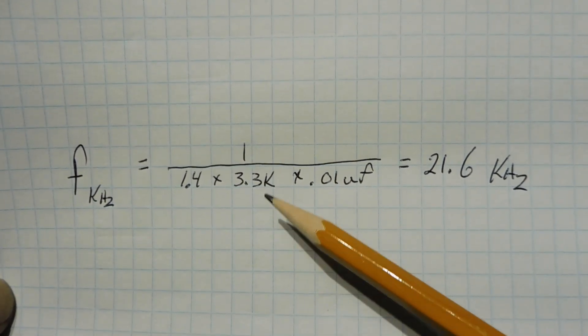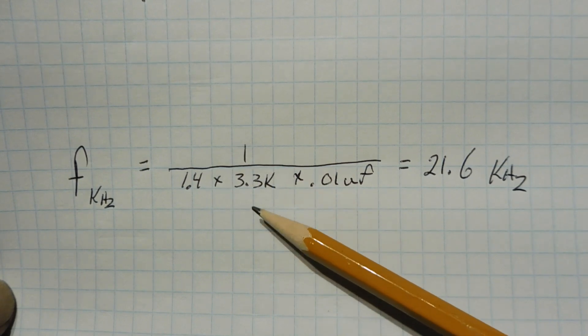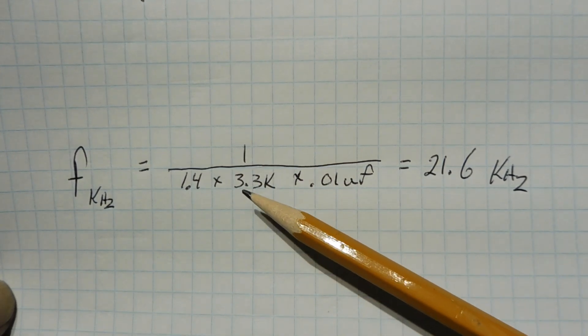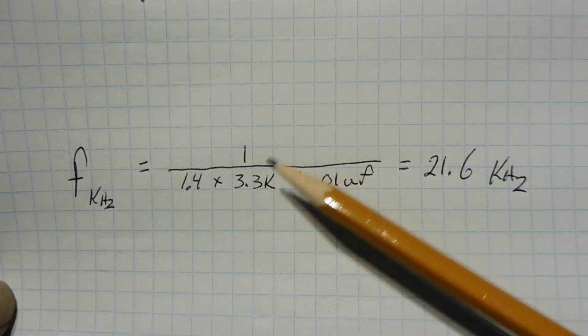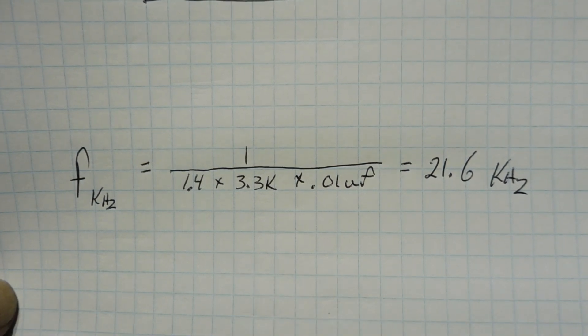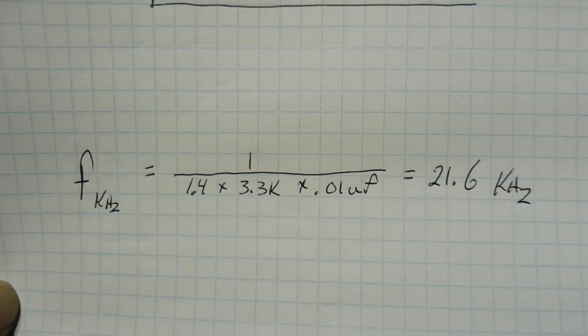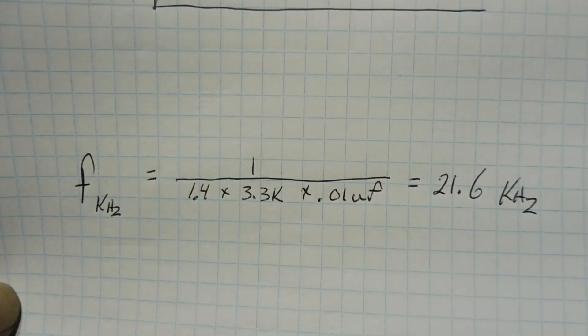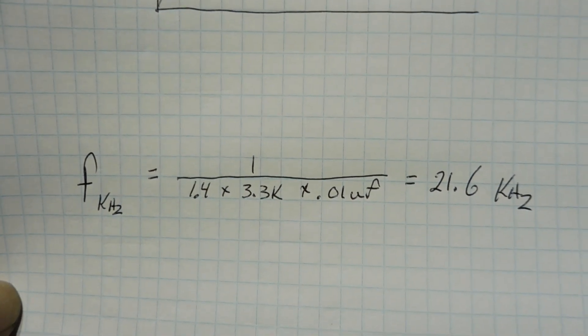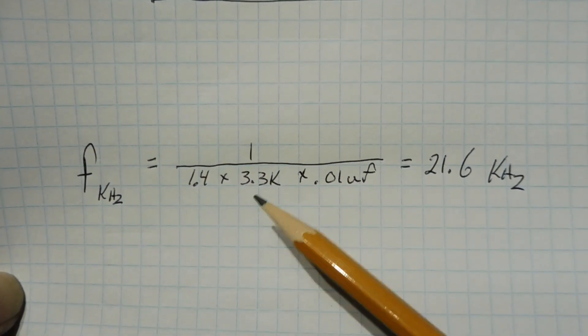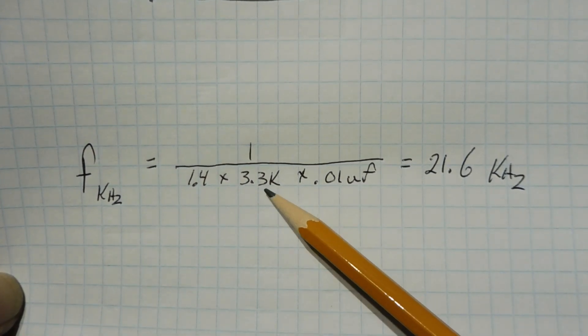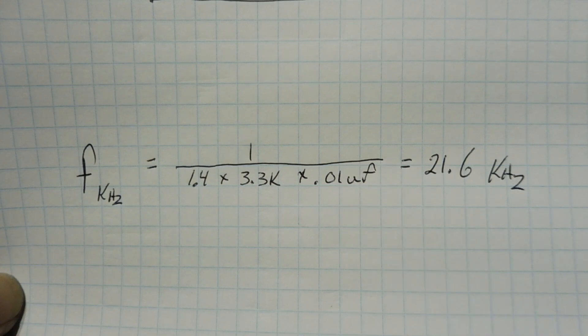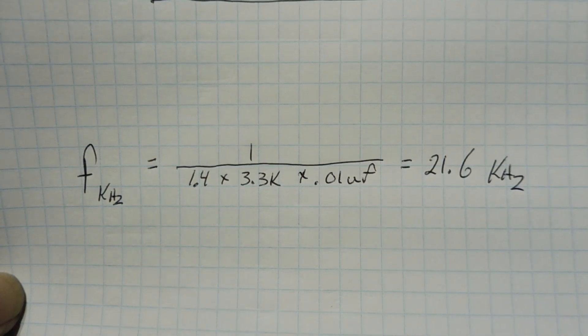Now one more note, the resistor of our RC network, 3.3K should be the lowest value. So you go 3.3K or higher, because we have to charge and discharge the capacitor through the resistor. So if we go any lower, it might exceed the source sink capabilities of the op-amp. So if we just keep the resistor 3.3K and higher, and change our capacitor, then we can calculate our output frequency in kilohertz.